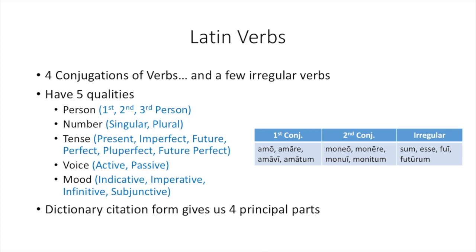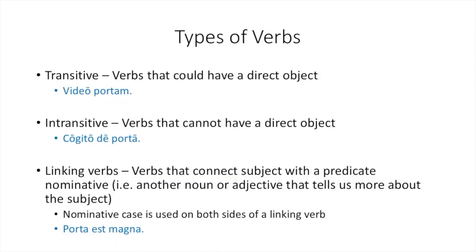The same four principal parts always have the same forms. The first principal part is your first person singular present active indicative, and your second principal part is your present infinitive. So let's look a little bit more at the types of verbs, so that we can talk more about sum esse.